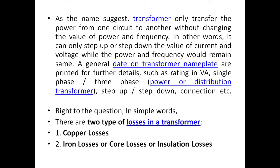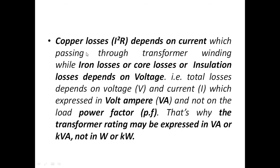The copper losses, or I²R losses, are completely dependent on the current passing through the transformer windings, while the iron losses, or core losses, are completely dependent on the voltage. So total losses depend on both voltage and current.